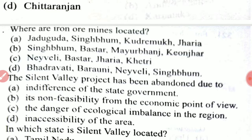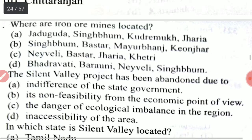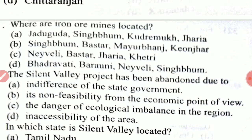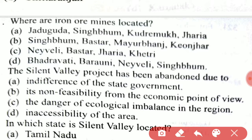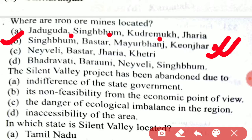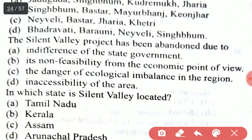Where are iron ore mines located? The right option is option B, Singham. Mayurbhanj, Keonjhar — these are the places where iron ore mines are located. Next, the Silent Valley project has been abandoned due to what reason?